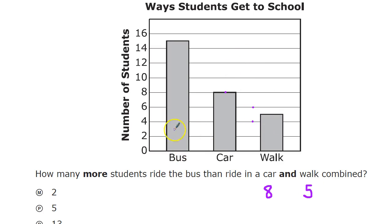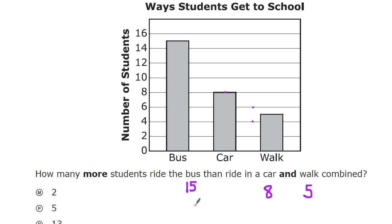For the bus: two, four, six, eight, ten, twelve, fourteen, and then a little more. So it's somewhere between fourteen and sixteen. Counting up — ten, eleven, twelve, thirteen, fourteen, fifteen — it doesn't reach sixteen, so we can assume the bus value is fifteen. Now I need to combine the car and walk values together.